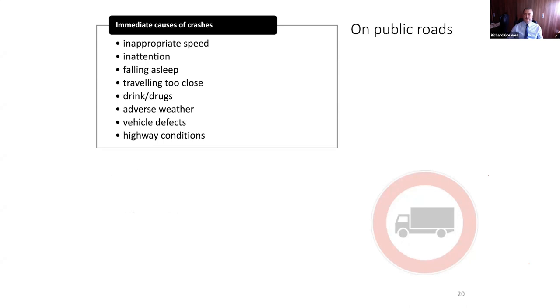The immediate causes of crashes on public roads include speed, inattention, falling asleep, travelling too close, drink and drugs, adverse weather, vehicle defects, and highway conditions — these are the norm for immediate causes of crashes.